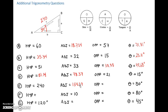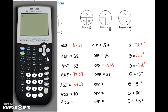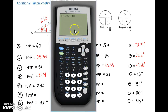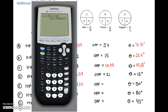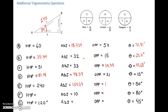Now we're looking for the opposite, and for the opposite we're going to use sine. The opposite is equal to sine of the angle times the hypotenuse — so sine of 50 degrees times our hypotenuse of 240. That gives us 183.85.